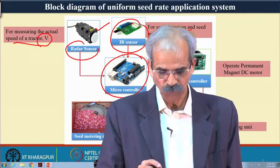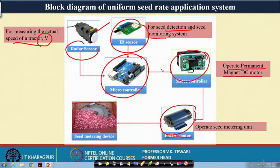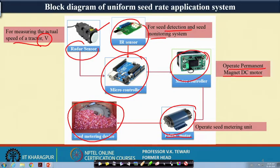The microcontroller takes in information from the radar and infrared sensors. It then advises the motor controller to operate the permanent magnet DC (PMDC) motor, which drives the seed metering mechanism. This is a cut diagram of the microcontroller-based seed application system showing the seed metering plate and seed locations.